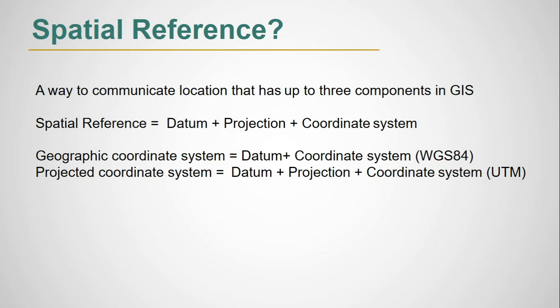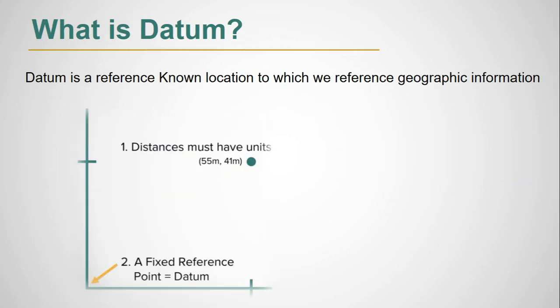What is datum? Datum is a reference known location to which we reference geographic information. Say I have a point information 50 meter and 40 meter. If I want to locate this point, I need a reference. Datum is such type of reference which is related to WGS 1984 in GIS.